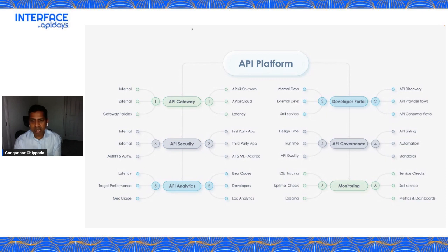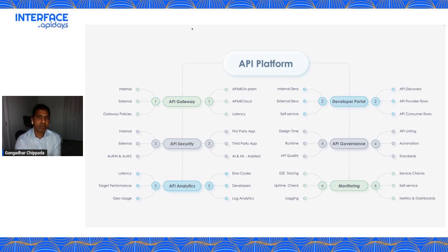End-to-end logging is very important. Also ensure you can do service checks — a simple implementation is to ask every backend of your APIs to implement a health endpoint, so you can centrally check from your gateway systems whether the actual services are up or down. This can tie back to your API governance — for example, implementing a health endpoint, doing regular pings to it, and showing that as a score in your developer portal. Offer as much monitoring as possible as self-service, and ensure you have metrics and dashboards in different dimensions.